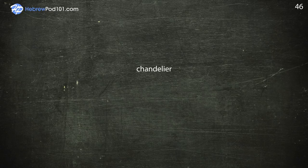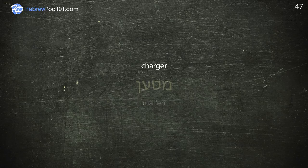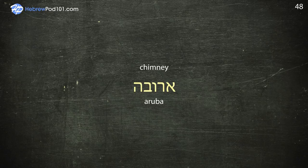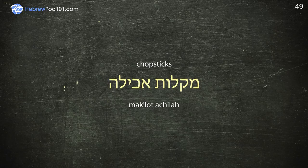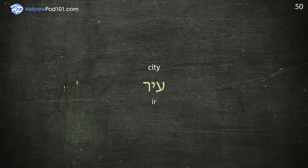Chandelier — Nivreshet. Charger. Chimney — Aruba. Chopsticks — Maklot Akhila. City — Ir.